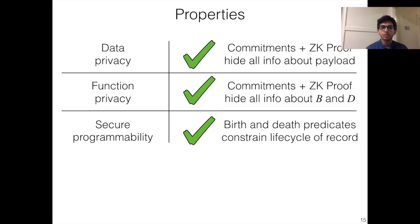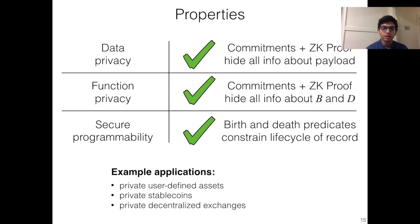Okay, so in summary, it seems that this new model of computation achieves all of our goals. Data privacy and function privacy are guaranteed as before by the commitment and zero-knowledge proof, but now we can achieve our programming goals because both the birth and death predicate constrain every aspect of the life cycle of a record. So in the paper, we show how we can use this now more powerful programming model to construct some useful applications like private user-defined assets, stablecoins, and decentralized exchanges. See the paper for extensive discussion of these.